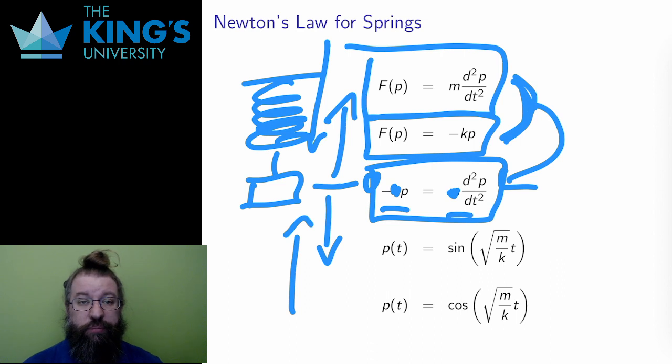I'm not going to prove it here, but you can simply check, if you want, that the solution to this is the sine of root m over k times t. The sine function fits this pattern where the second derivative is the negative of the original function.